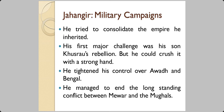When we look at the military campaigns of Jahangir, he tried to consolidate the empire he inherited from his father. His first major challenge was his own son — Khosro rebelled against his father Jahangir, but Jahangir crushed the revolt with a strong hand. He tightened his control over Awadh, which is in Uttar Pradesh now, and Bengal. He also managed to end the long-standing conflict between Mewar and the Mughals; Mewar was in Rajasthan.